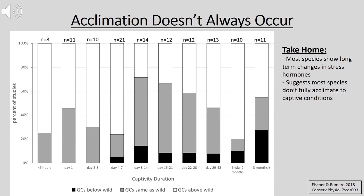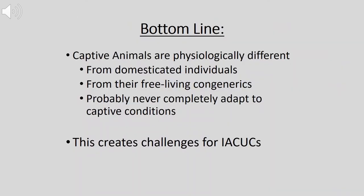The take-home message is that most species show long-term changes in stress hormones, suggesting that most species don't fully acclimate to captive conditions even over long periods of time. The bottom line is that captive animals are physiologically different — different from domesticated individuals, different from their free-living congeners, and they probably never completely adapt to captive conditions. This creates challenges for IACUCs.